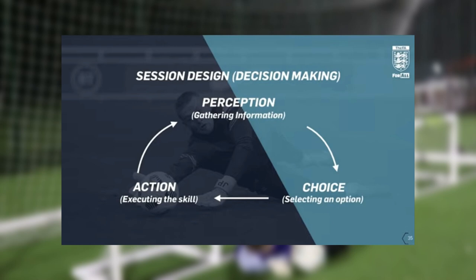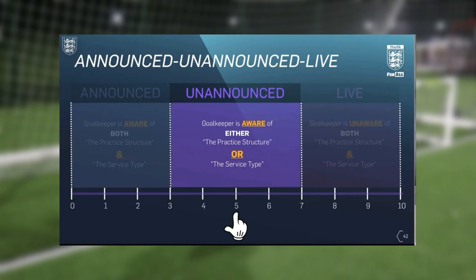Within that webinar, which I'll link below — watch it after this video — it talks about three different types or classifications of exercises: announced, unannounced, and live. This is essentially a sliding scale going from not very realistic to the game at the lower numbers, up to very realistic to the game at the nines and tens.